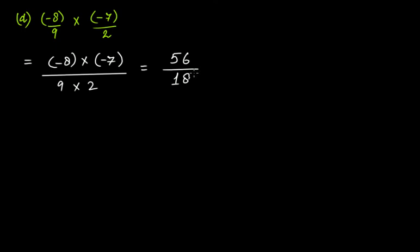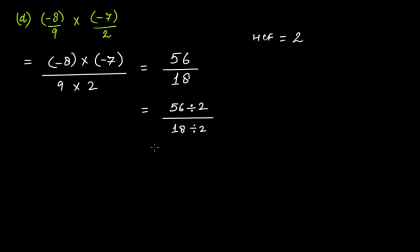Now to simplify it, find the highest common factor of 56 and 18. The highest common factor is 2. So divide 56 by 2 and 18 by 2 and you get 28 over 9. So this is the answer for this one.